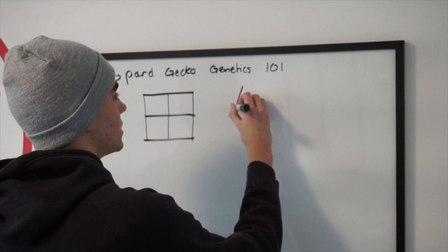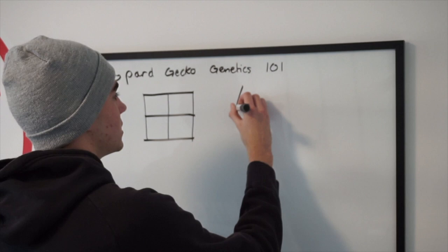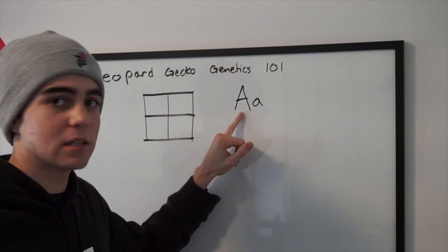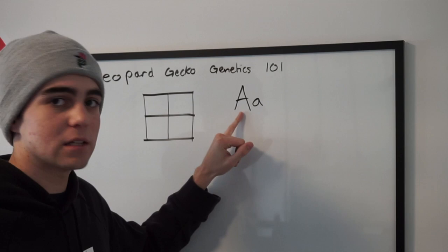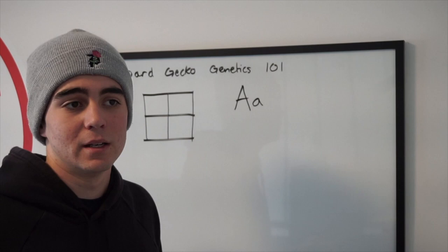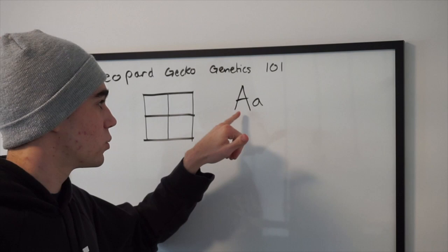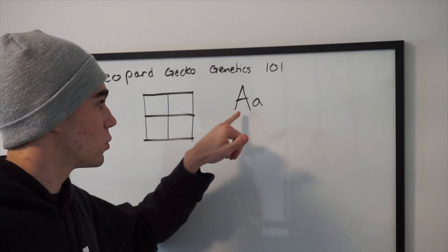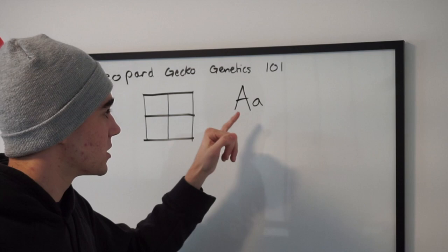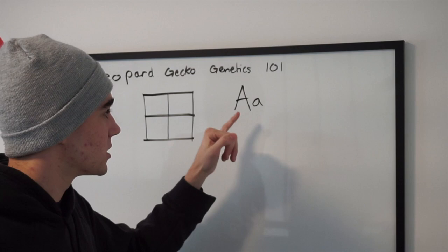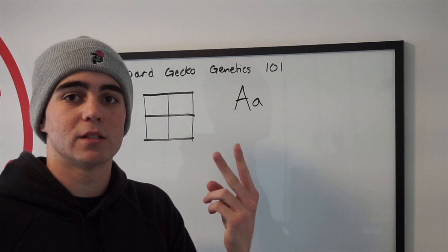First of all, a dominant gene might show up something like this. Let's say AA is what it is. The big A — as long as it has one uppercase A, as long as it has that dominant allele, it will display that trait no matter what. So if it's dominant for, let's say, white and yellow — let's say this A stands for the white and yellow gene in leopard geckos, or maybe something like the Mojave gene in ball pythons for co-dominant — as long as it shows just one of those, it will be present in the animal visually. Dominants work like that.